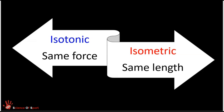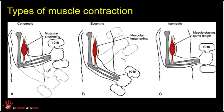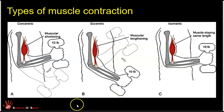So we've got two categories of contraction. Isotonic, where the same tension is applied but there is movement and a change in length of the muscle. We've also got isometric contraction, where there is tension in the muscle but the muscle stays the same length, and because it stays the same length there is actually no movement. On the diagram, A and B represent both examples of isotonic contraction — shortening and lengthening respectively. C is our example of isometric contraction: tension in the muscle, but the muscle stays the same length and therefore there is no movement.